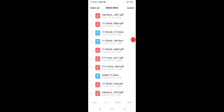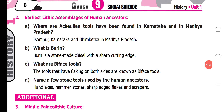Next, the caption question: the earliest lithic assemblages of human ancestors where all Acheulean tools have been found are in Karnataka and Madhya Pradesh — found in Isambur, Karnataka, and Umandikha in Madhya Pradesh. A burin is a stone-made tool with a sharp cutting edge. Biface tools are tools with both sides sharpened. Some stone tools used by human ancestors include hand axes, hammer stones, sharp-edged flakes, and scrapers.